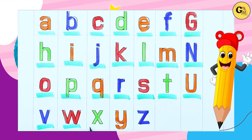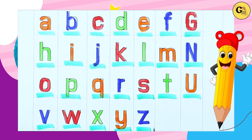W for watch. X, X for xylophone. Y, Y for yak. Z, Z for zebra. Thank you kids.